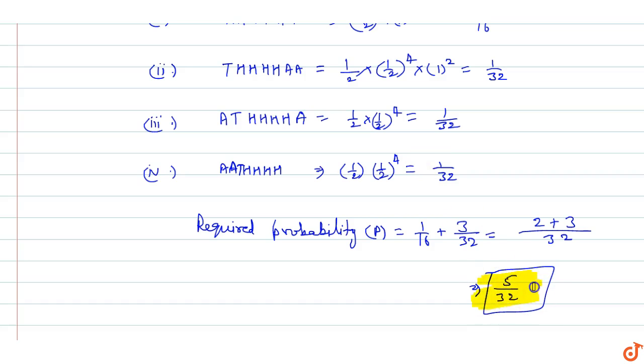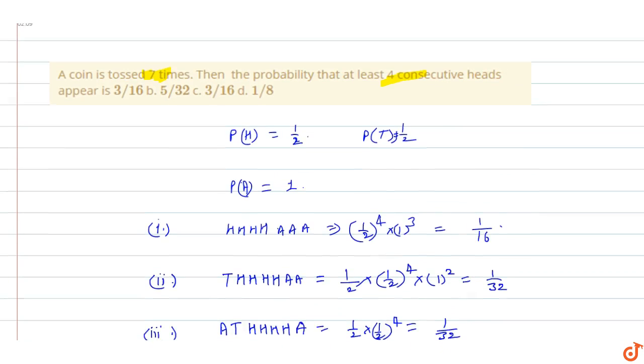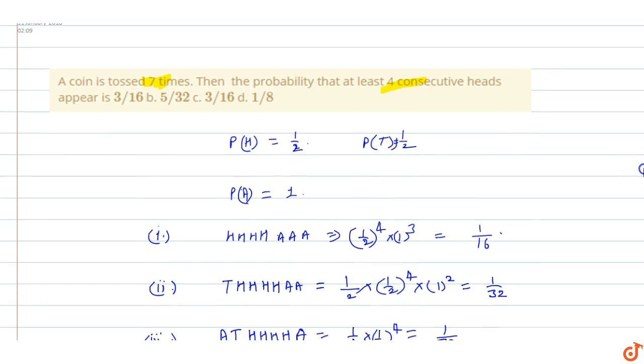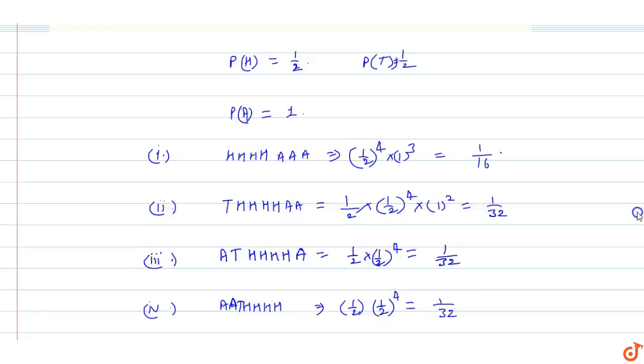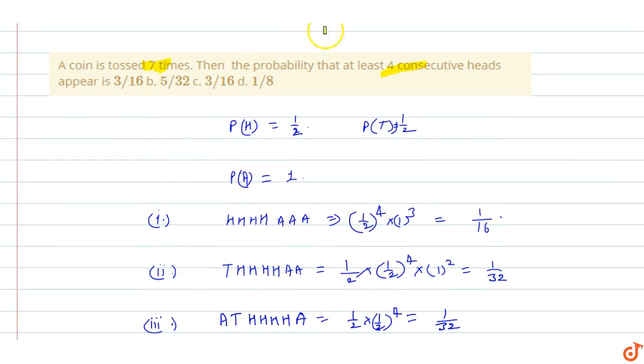That at least 4 consecutive heads appears is equal to 5 by 32, means option B will be the correct option. So this is the answer for this question.